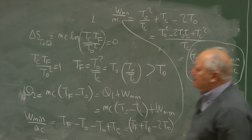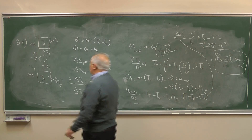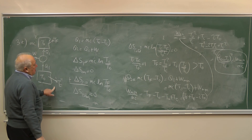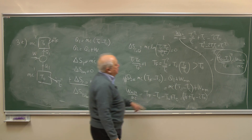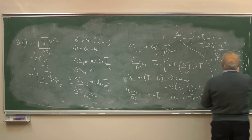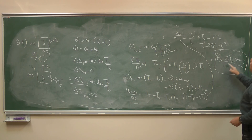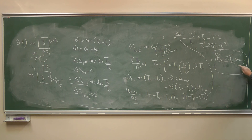So what did we find? We find that to reduce one block from T0 to Tc, we must do this amount of work at the minimum — MC times (T0 minus Tc) squared over Tc.